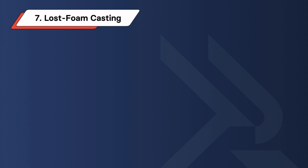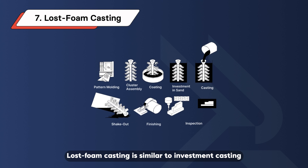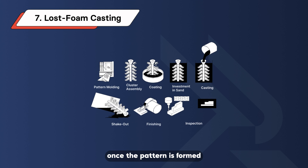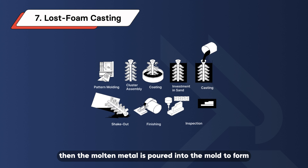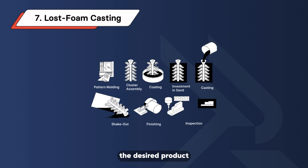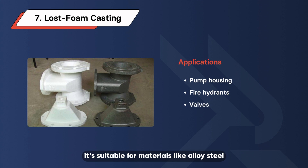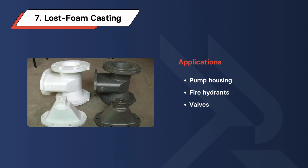Lost Foam Casting. Lost foam casting is similar to investment casting, but uses foam for the pattern. Once the pattern is formed, coating with a refractory ceramic takes place by dipping, coating, spraying, or brushing. Then, the molten metal is poured into the mold to form the desired product. It's suitable for materials like alloy steel and carbon steel, making products like pump housing, fire hydrants, and valves.